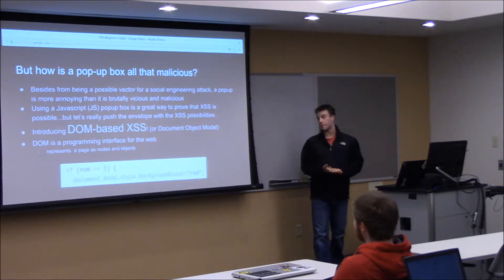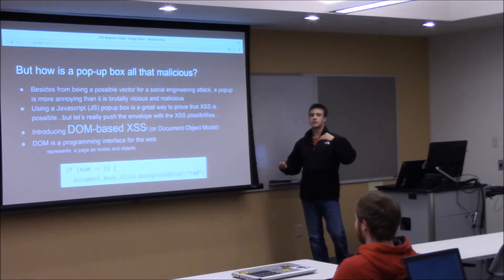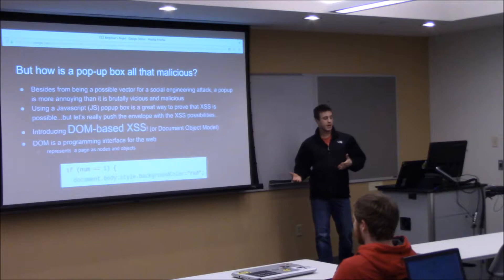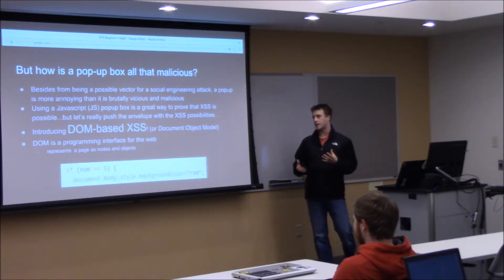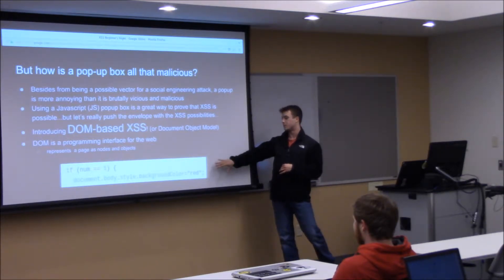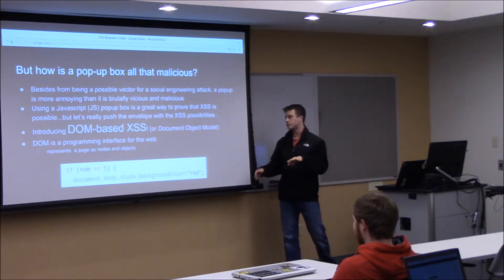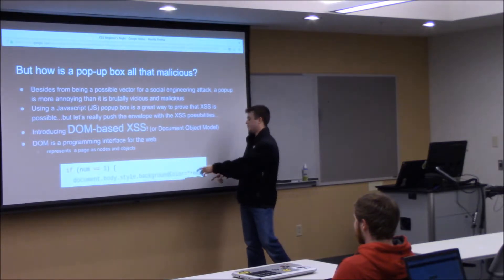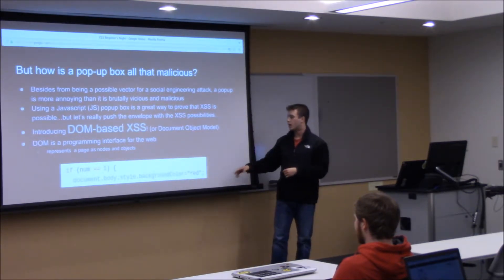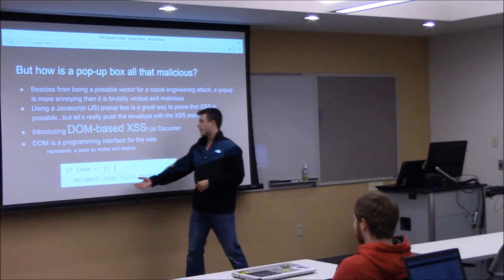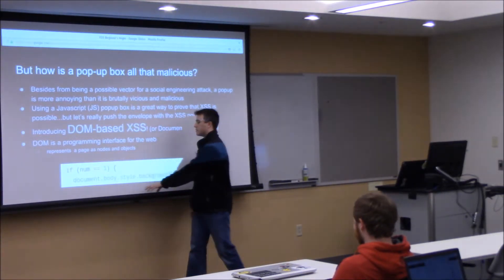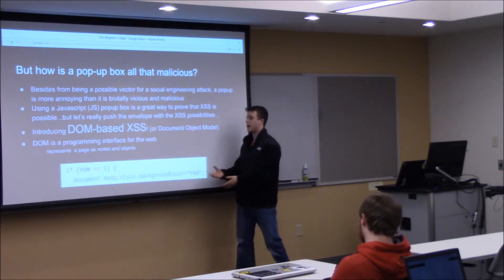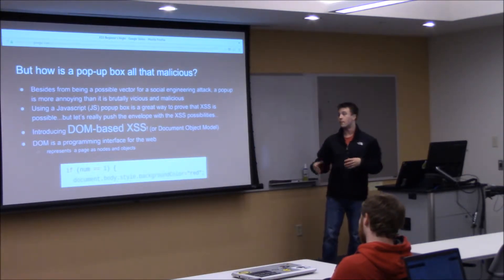DOM stands for Document Object Model. It's basically an interface to program with web browsers and the web. It represents a page and all the different things involved in a web page as nodes and objects. Here I have an example from some code I wrote to change the color of the page. Normally you could do this with CSS, however when I use JavaScript I can actually change the color of the page every second, making it flash. We access the Document Object Model by saying 'document', then we have nodes associated with our document such as 'body', and then we can start styling things like background color using CSS-like syntax through the DOM.